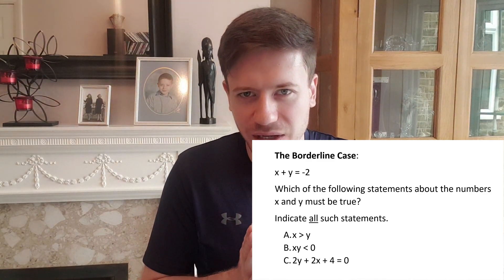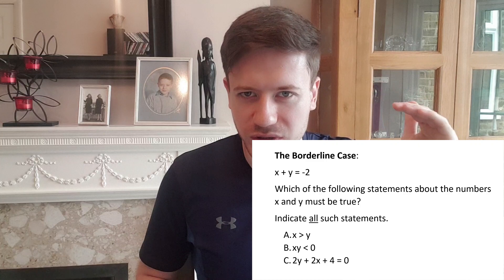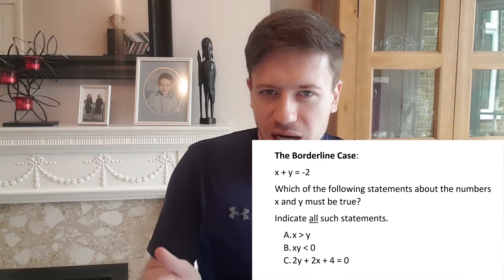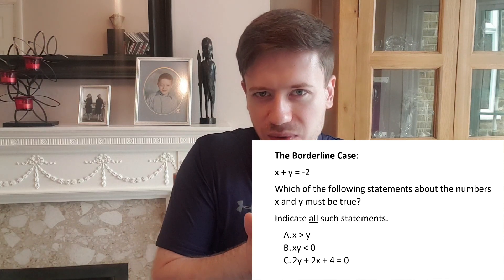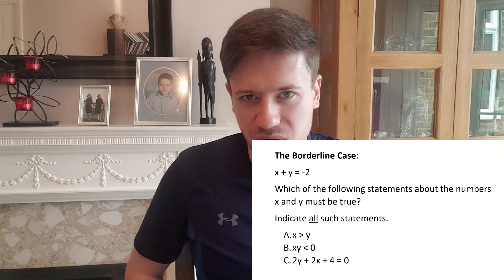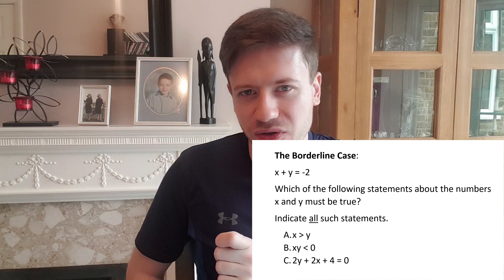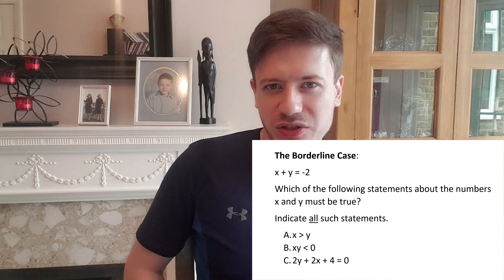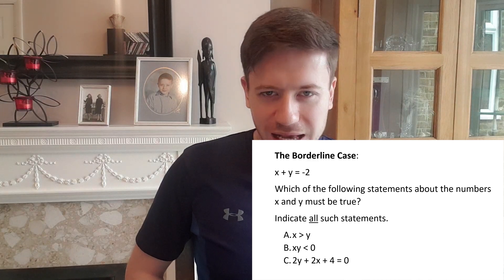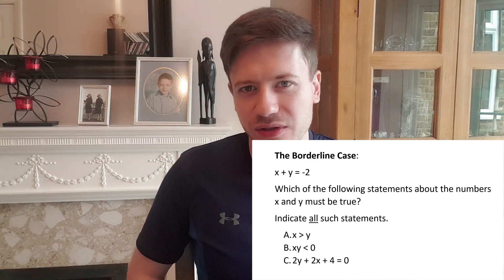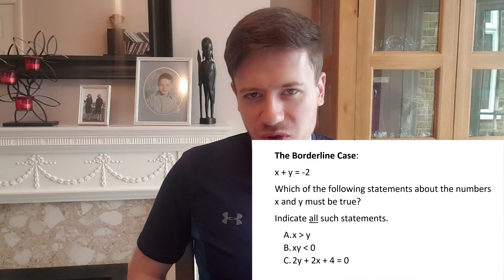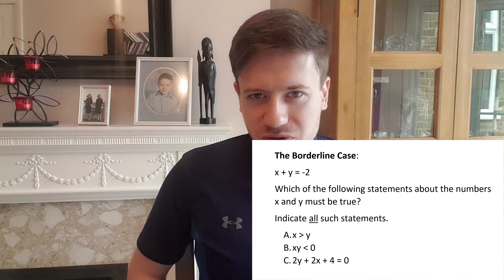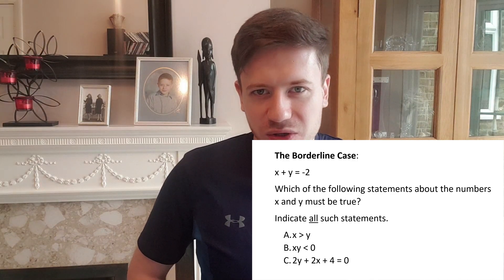Finally for the third statement again using logic and inference without picking numbers we could shift the minus 2 across to the other side in the original equation and get x plus y plus 2 equals 0 and then just realize that the third statement is that equation multiplied by 2. x plus y plus 2 equals 0. If you times it by 2 becomes 2x plus 2y plus 4 equals 0. So the third statement must be true because it's the same as the original equation.